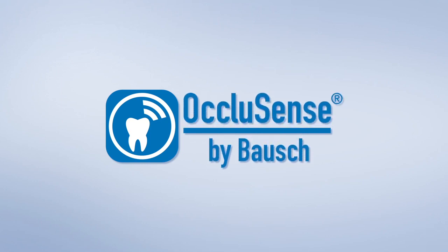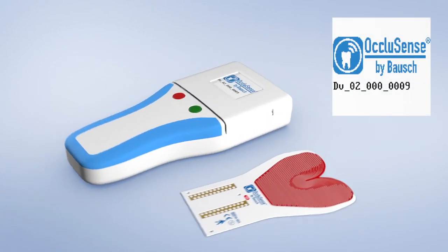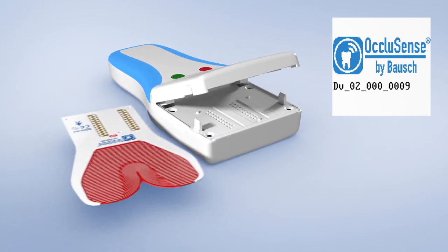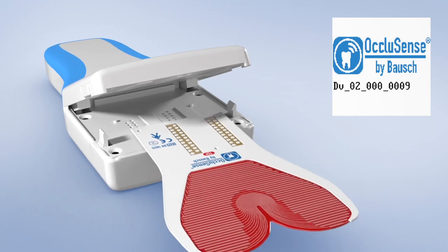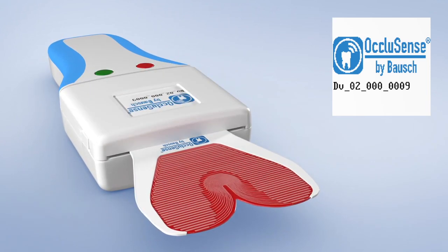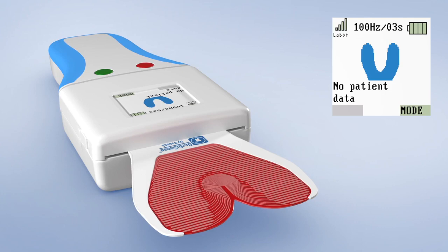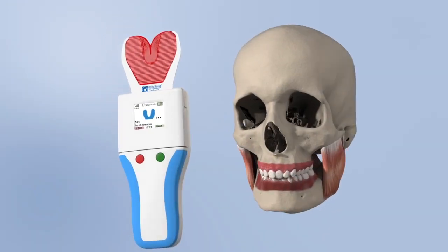OccluSense by Bausch: The new OccluSense system developed by Bausch combines traditional and digital registration of occlusal surface pressure distribution. The OccluSense device is used in combination with a 60 micron thin, single-use pressure sensor coated with red color.